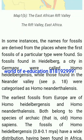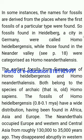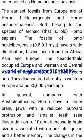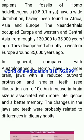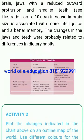In some instances, the names for fossils are derived from the places where the first fossils of a particular type were found. So fossils found in Heidelberg, a city in Germany, were called Homo heidelbergensis, while those found in the Neander Valley were categorized as Homo neanderthalensis. The earliest fossils from Europe are of Homo heidelbergensis and Homo neanderthalensis — both belong to these species of archaic, that is old, Homo sapiens. Fossils of Homo heidelbergensis (0.8–0.1 million years ago) have a wide distribution, having been found in Africa, Asia and Europe. Neanderthals occupied Europe and Western and Central Asia from roughly 130,000 to 35,000 years ago, and disappeared abruptly in Western Europe around 35,000 years ago.